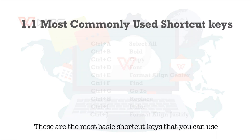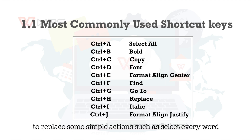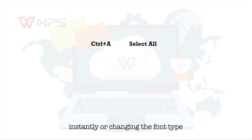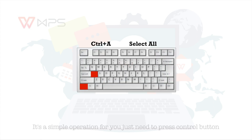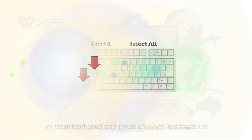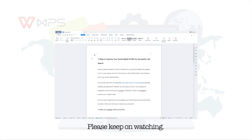These are the most basic shortcut keys that you can use to replace some simple actions, such as selecting every word instantly or changing the font type. It's a simple operation — you just need to press the control button on your keyboard and press another key together. For a more detailed video illustration, please keep on watching.